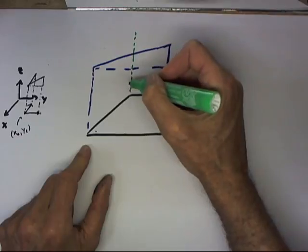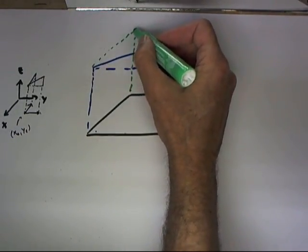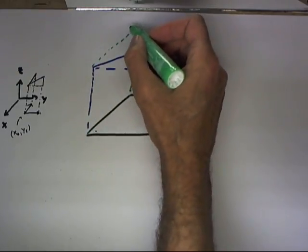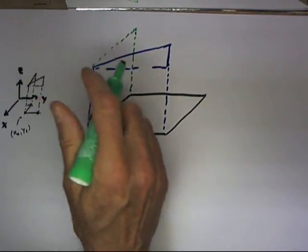And this would be our level line, the line that doesn't rise or fall with respect to the z coordinate.